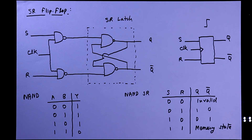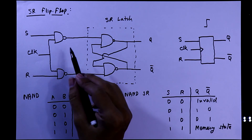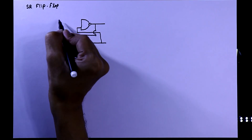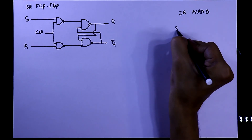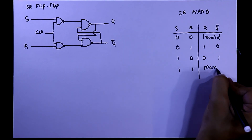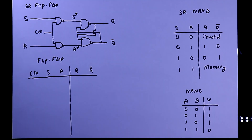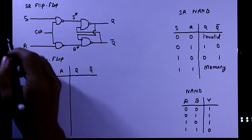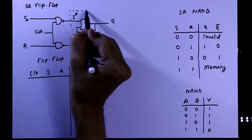Now we will use this information to find out the output of this SR flip flop. Again I am drawing the SR flip flop. Here is the truth table of SR NAND gate and the truth table of NAND gate. We will use this information to analyze this circuit, and here is the SR latch portion.